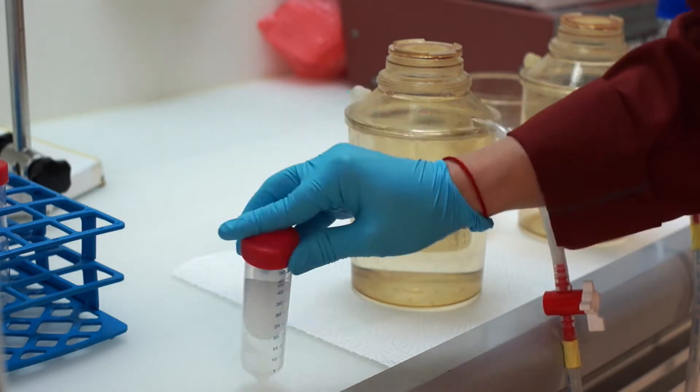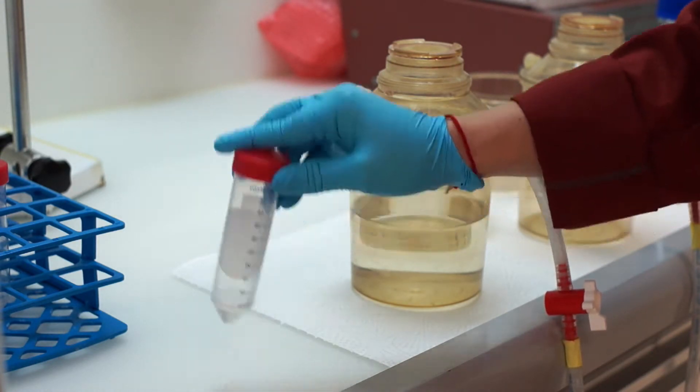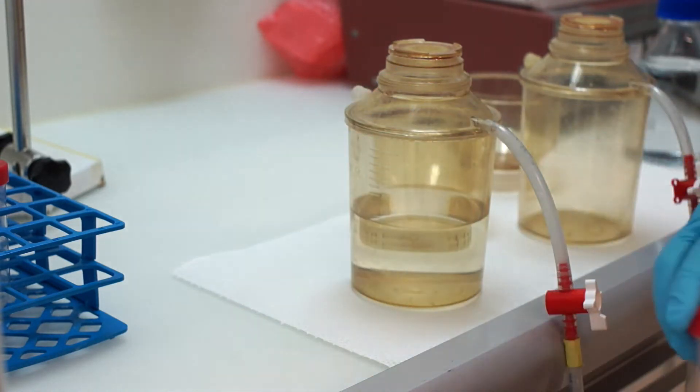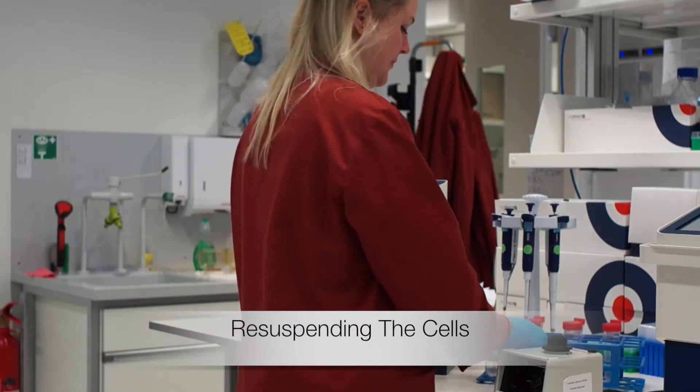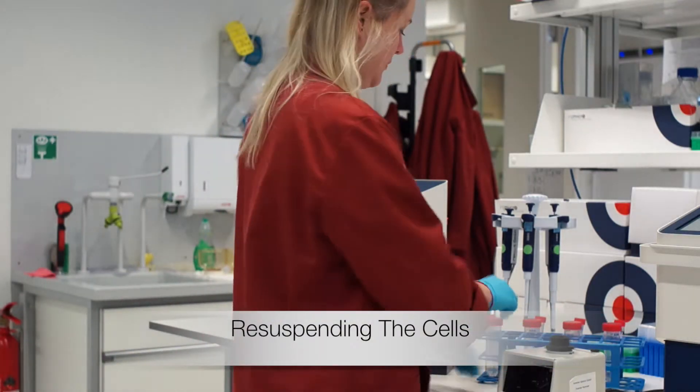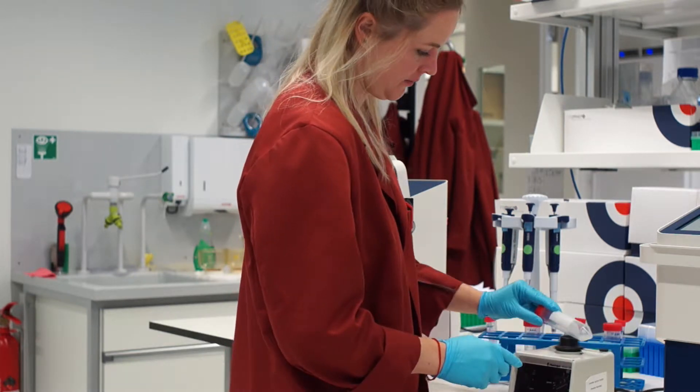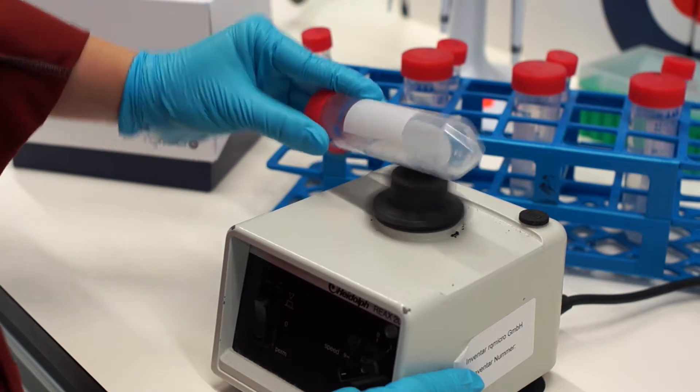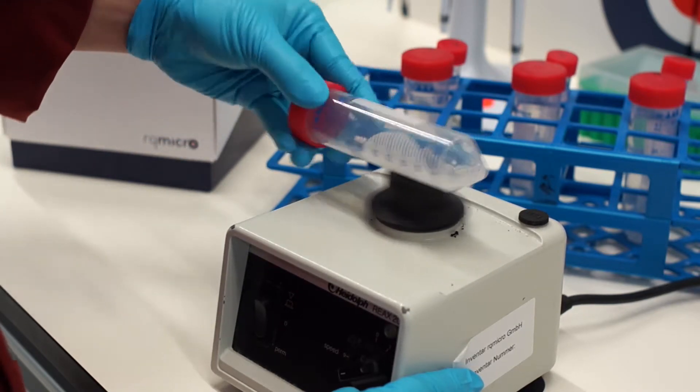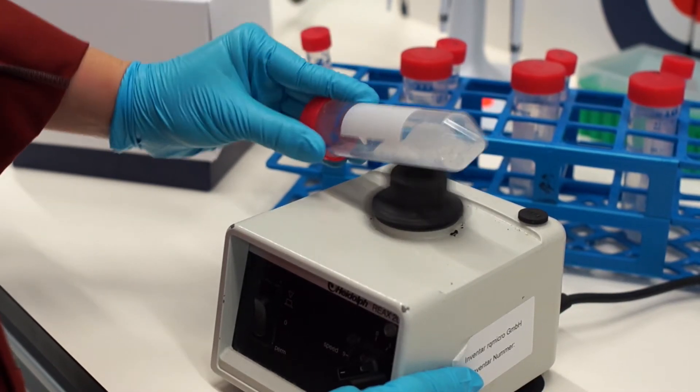By tapping the tube on a hard surface the filter moves to the lower part of the tube. By vortexing the tube for 30 seconds I'm creating turbulence on the surface of the filter and thereby resuspend the cells in buffer. The filter might move back and forth but it should always lie flat on the inner wall of the falcon tube.